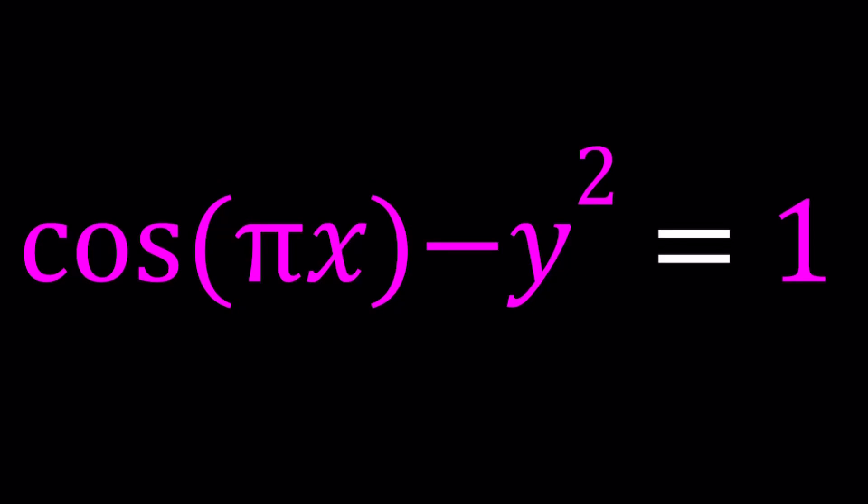Hello everyone. In this video we're going to be solving a non-standard equation. Why is it non-standard? Because we have two variables — cosine and a quadratic term. So this problem requires a non-standard method. Let's go ahead and take a look.